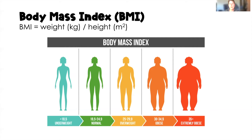When we calculate body mass index, there are five categories. Underweight is a BMI less than 18.5. Normal is 18.5 to 24.9. Overweight is 25 to 29.9. Obese is anything over 30. And those with a BMI greater than 35 are considered extremely obese. It's really important that you can classify a client's BMI based on their height and weight.